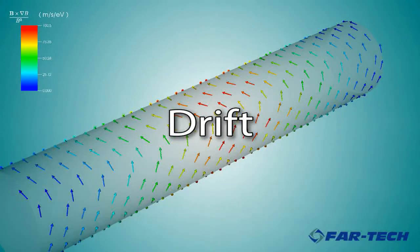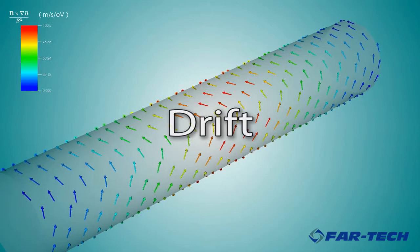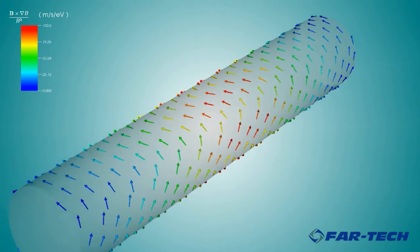In addition to motion along the field lines, the electrons drift due to the gradient and curvature of the magnetic field.